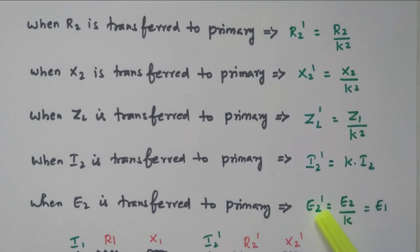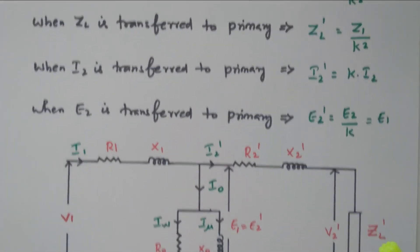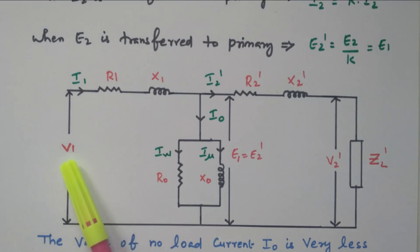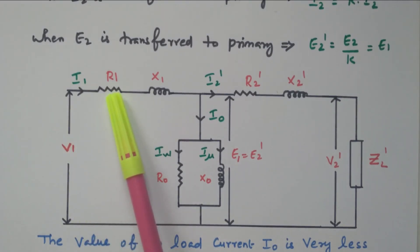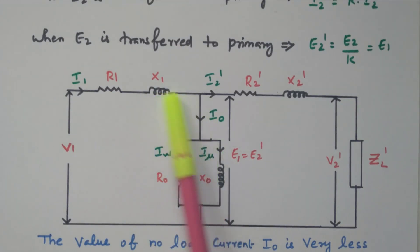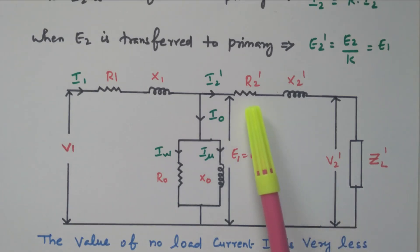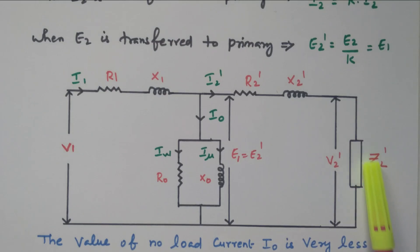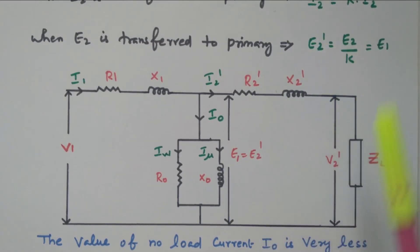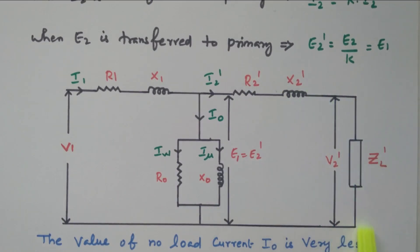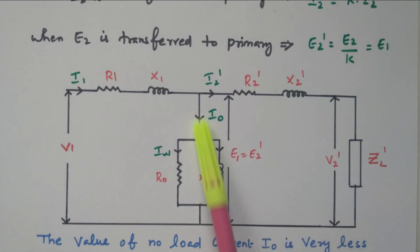Now that everything is transferred to the primary side, we can redraw the equivalent circuit. The applied voltage V1, current I1, R1, X1, and I0 are all on the primary side. The secondary parameters are now also on the primary side as R2 dash, X2 dash, E2 dash, V2 dash, and ZL dash. This gives us the primary side parameters and the equivalent secondary side parameters R2 dash and X2 dash, along with the no-load component I0, all in one circuit.